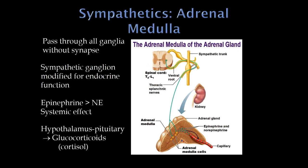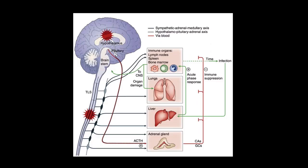This activation releases glucocorticoids — cortisol is the most important. In an extremely stressful situation, the sympathetics activate the adrenal gland to release cortisol, which can help with sympathetic function. The hypothalamus through release of ACTH activates the adrenal gland to release cortisol and other glucocorticoids.